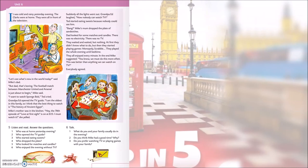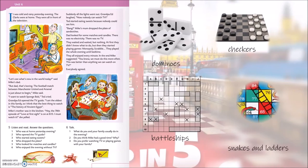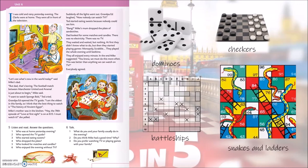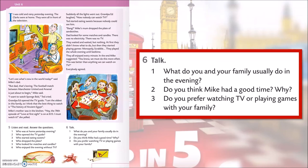Znaš li nazive još nekih dječjih igara? Znaš li što su dominoes? Domino. Checkers — dama. Battleships — potapanje brodova. Snakes and ladders — zmije i ljestve. What do you and your family usually do in the evening? Do you think Mike had a good time? Why? Do you prefer watching TV or playing games with your family?